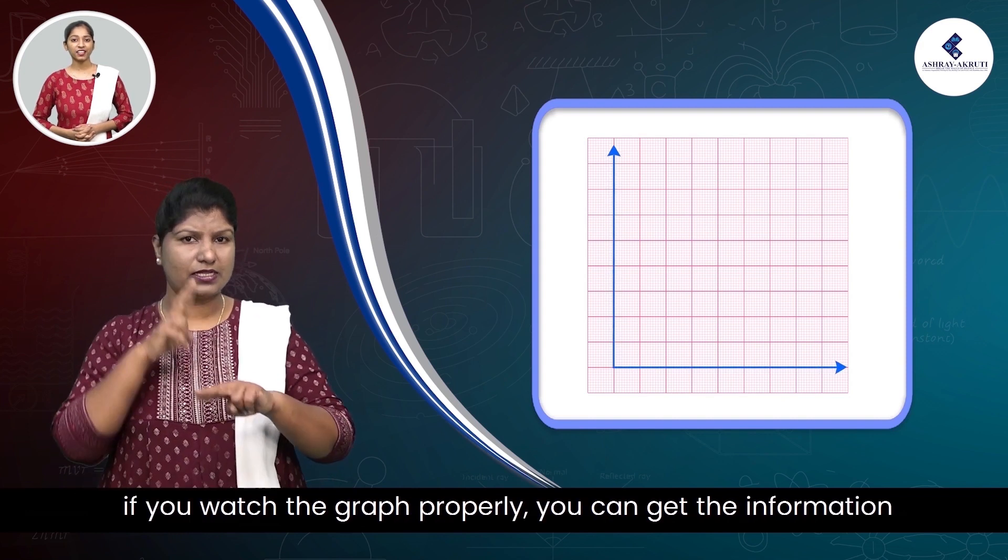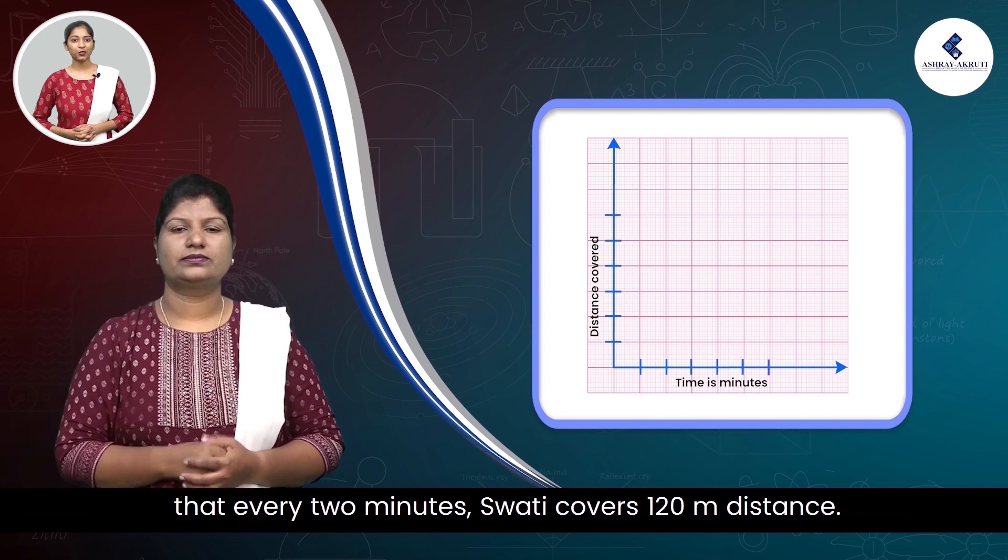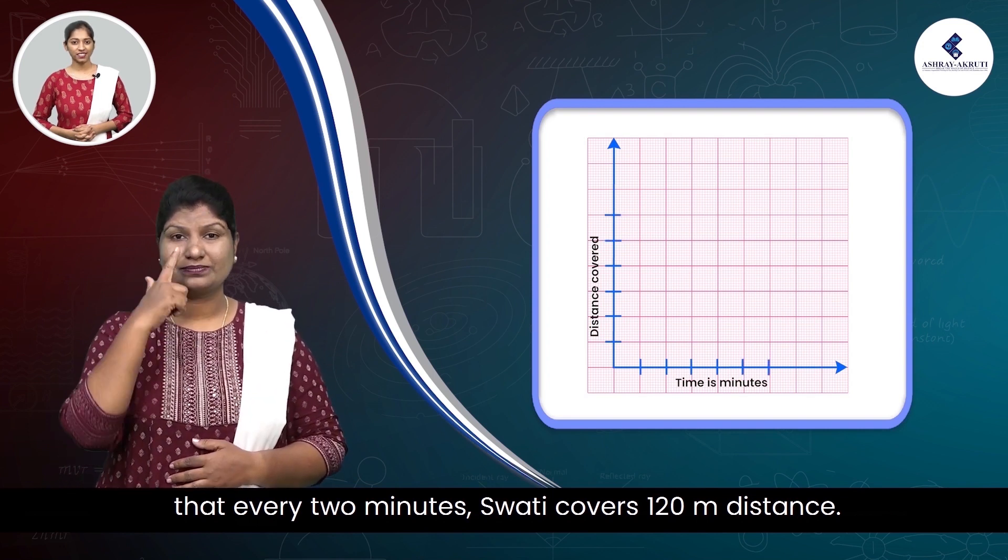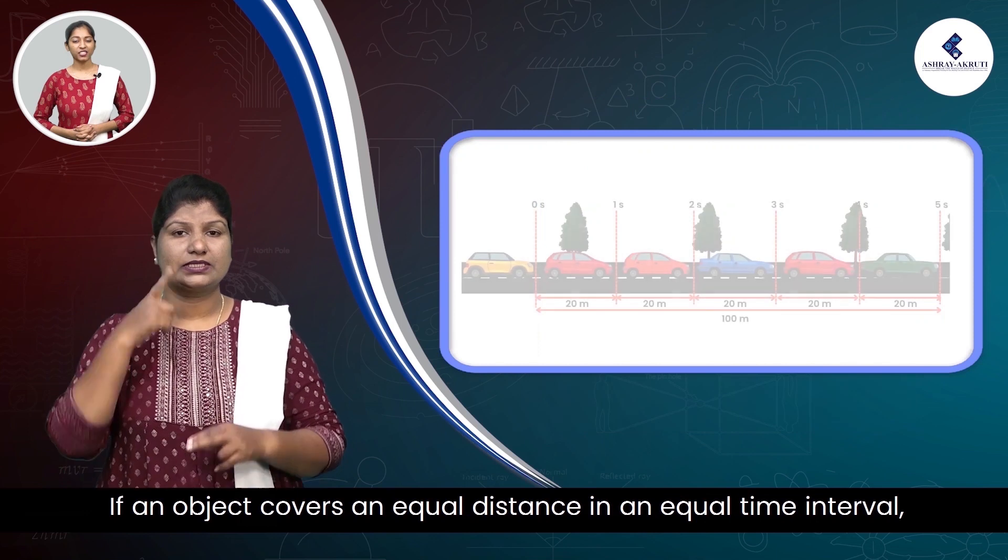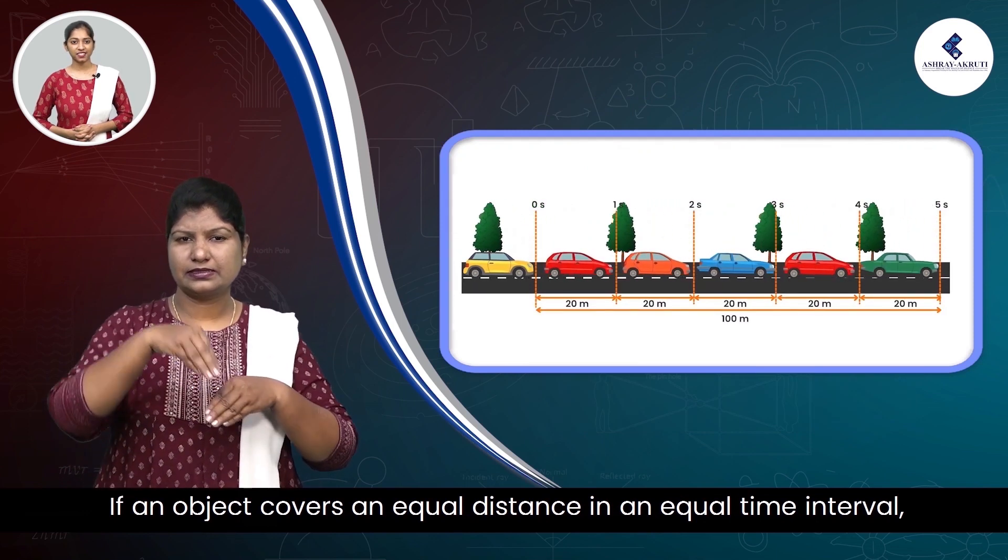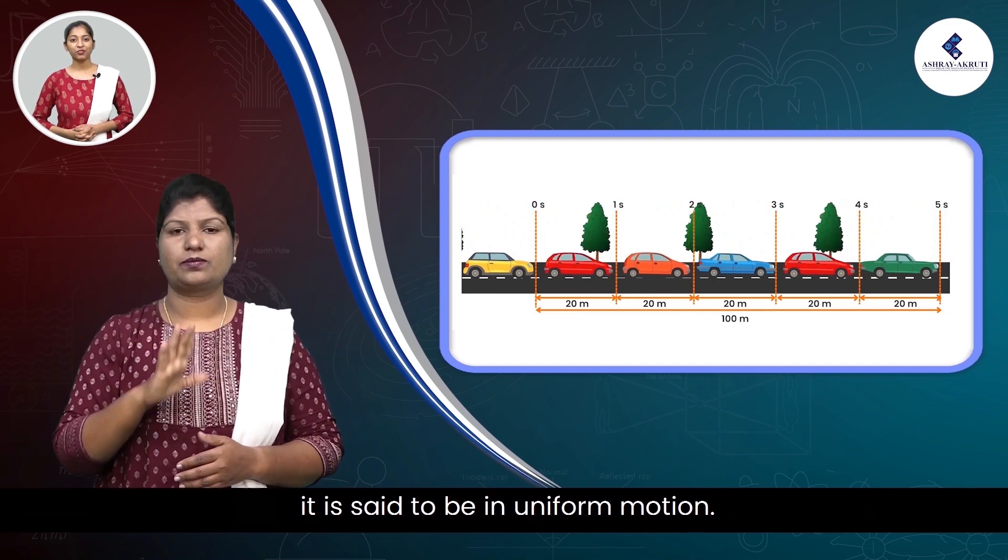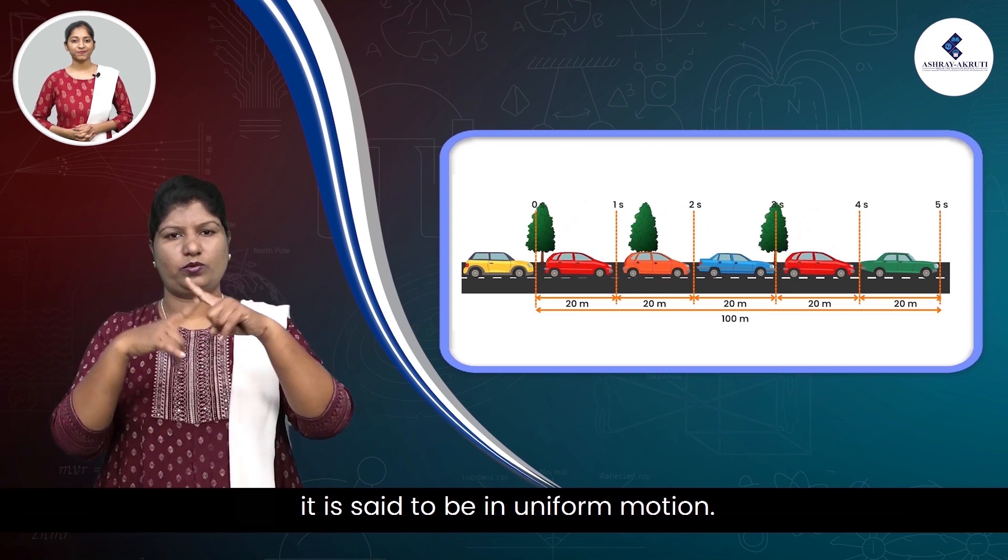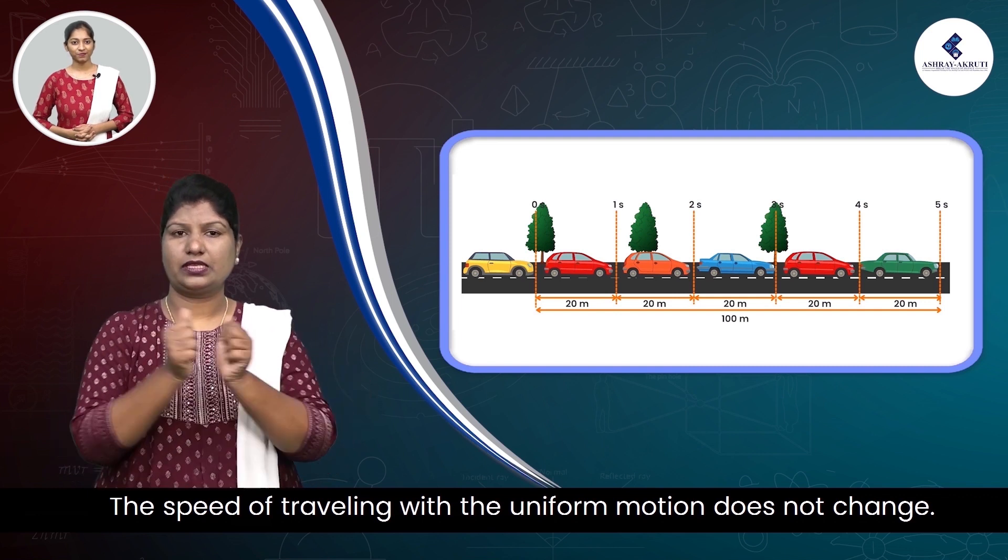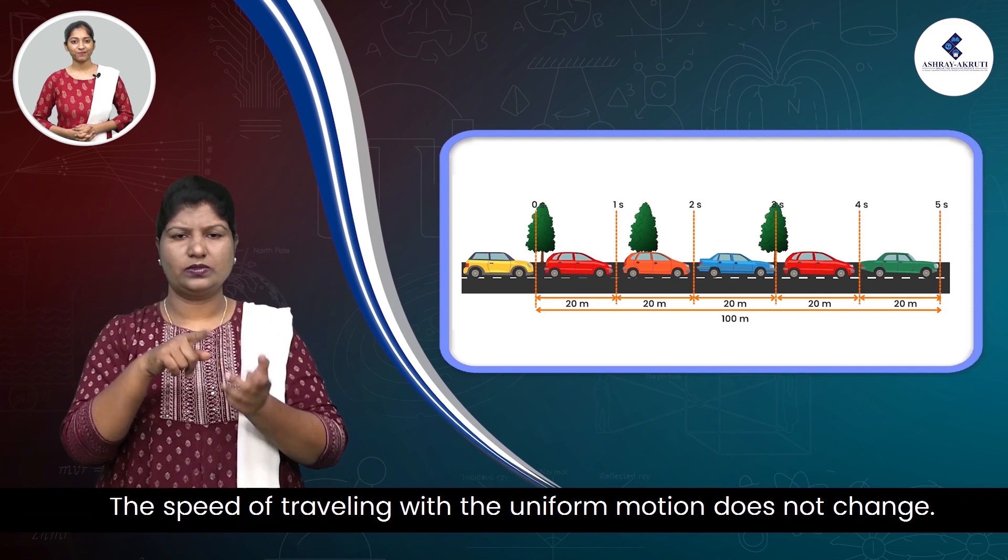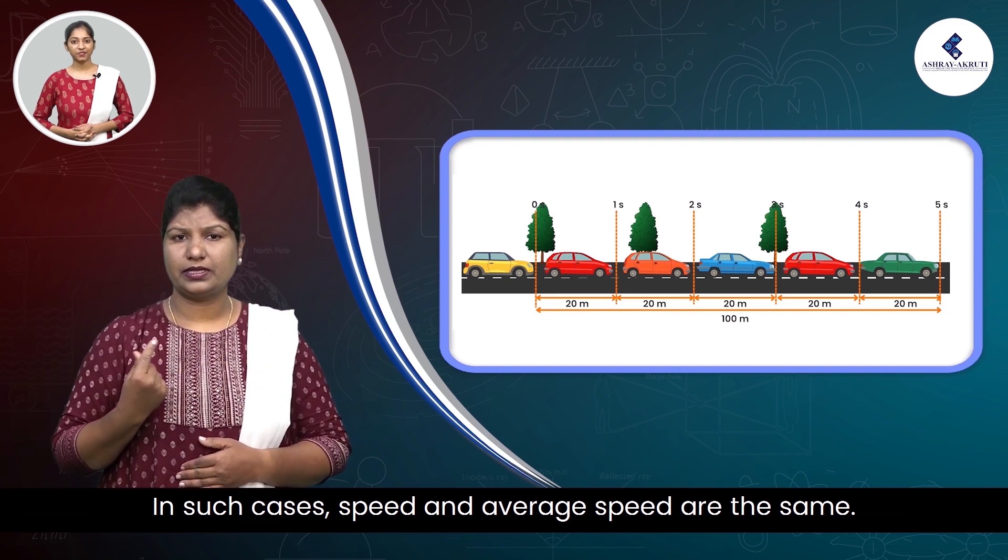If you watch the graph properly, you can get the information that every two minutes, Swati covers 120 meters distance. If an object covers equal distance in equal time intervals, it is said to be in uniform motion. The speed of traveling with uniform motion does not change. In such cases, speed and average speed are the same.